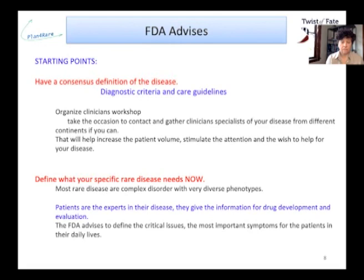The second point is to define what your specific rare disease needs. Most rare diseases have large and diverse phenotypes. Your patients are the experts in their disease — they will provide the information for drug development and evaluation. The FDA advises defining the critical issues: the most important symptoms for patients in their daily lives. This will facilitate the decision to approve a drug if it is proven that the drug's target will benefit and change the patient's life.